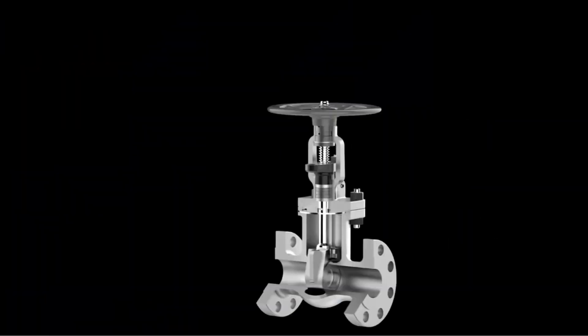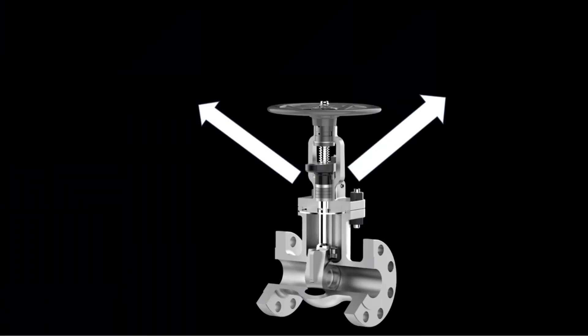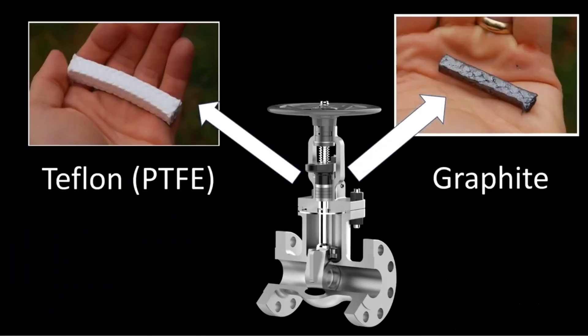For a simple control valve, what are the basic packing materials? Usually these two materials are the most used: the first one is PTFE and the second one is graphite. These are actual pictures of how PTFE and graphite look like.